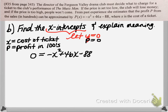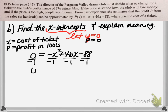We have several options when solving a quadratic equation: you can try to factor, complete the square, or use the quadratic formula. For this example, I'm going to demonstrate completing the square. When completing the square, you first want your leading coefficient to be positive 1. Because our leading coefficient is negative 1, we divide both sides by negative 1, giving us: 0 equals positive x squared minus 46x plus 88.